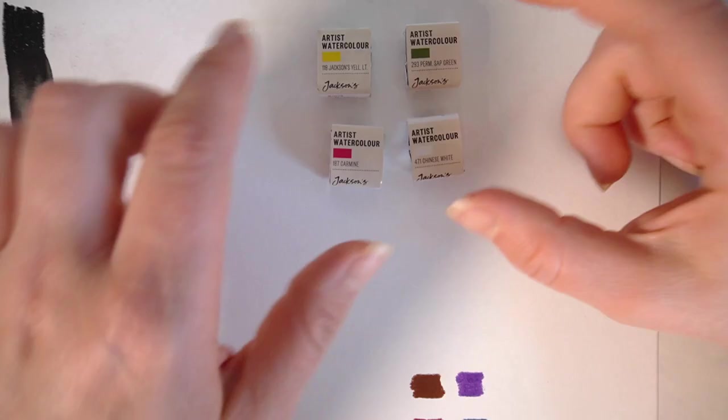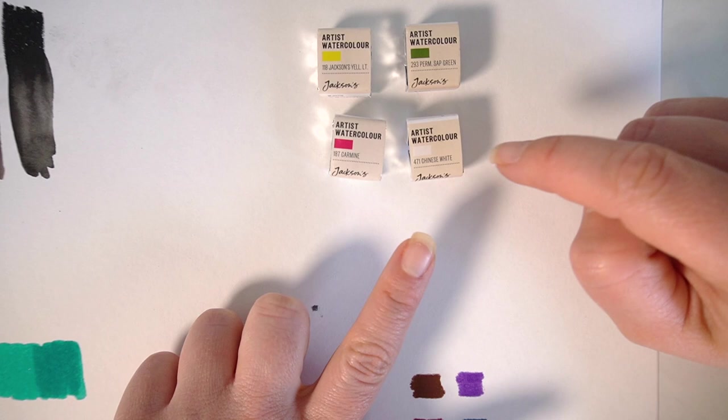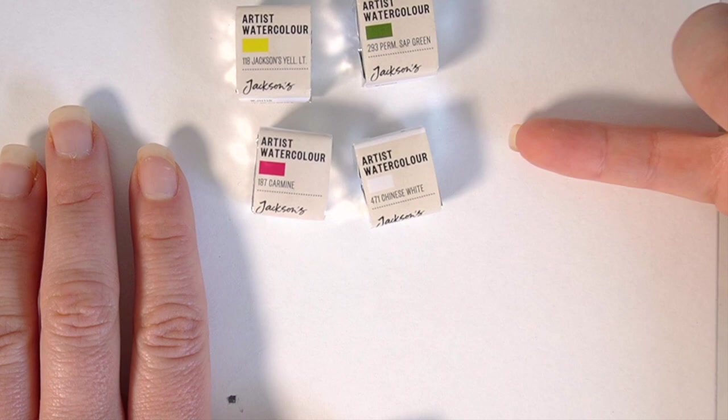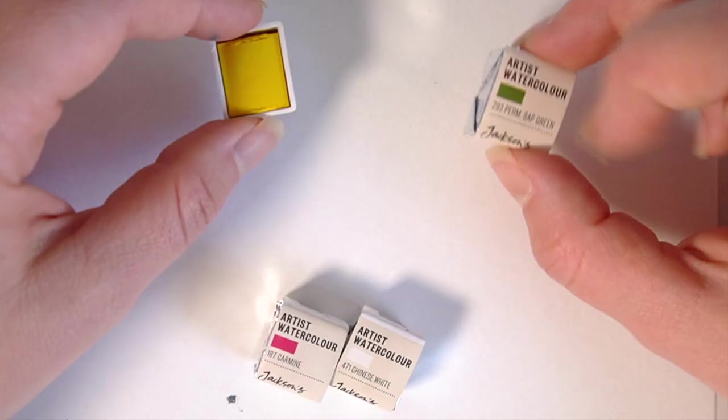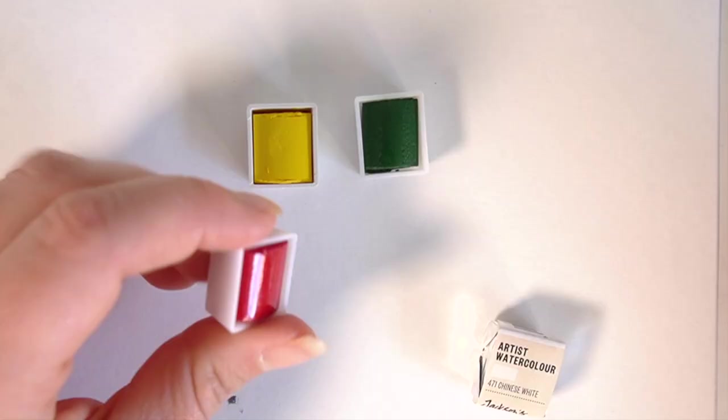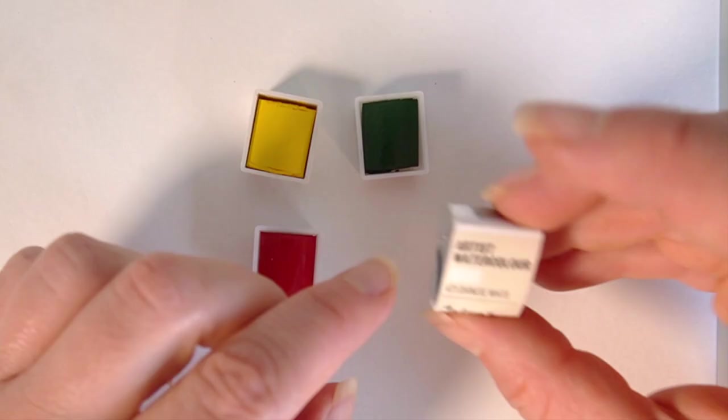Okay, now to test out these watercolors by Jackson's. I really enjoy using these. They are lightfast and I think they're a really good affordable option. So I've got that Jackson's light yellow, got the permanent sap green, carmine and then we've got the Chinese white. I'm going to swatch these.